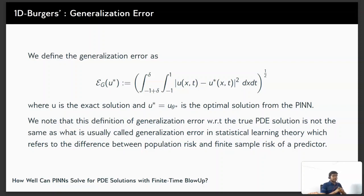We define the generalization error as this, where u is the exact solution and u* or u_theta* is the optimal solution from the PINN. We would like to note here that this definition of generalization error with respect to the exact solution is not the same as what is usually called the generalization error in statistical learning theory, which refers to the difference in the population risk and the sample risk of predicted.